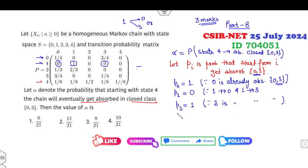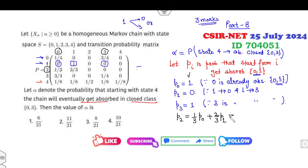What is P_2? Is it possible to start from state 2 and reach state 0 or 3? Yes. So I can write P_2 = (1/3) * P_0 + (2/3) * P_1. Since P_0 = 1 and P_1 = 0, this gives P_2 = 1/3.